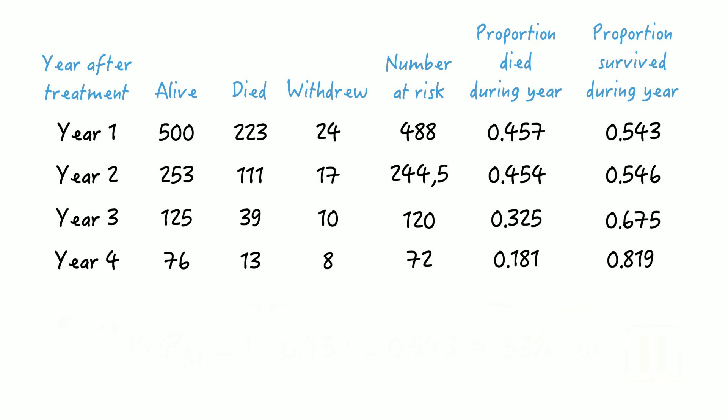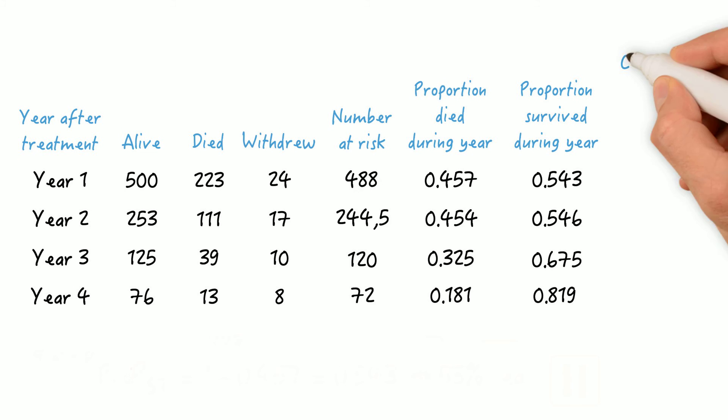Now comes the final step in the process, and that's to calculate the cumulative survival from the start of the study to the end of each year follow-up. You've already learned how to do that in one of our previous videos. It's by multiplying the proportions of the individual years. So surviving from the start of the study to the end of year 1 is the same as surviving year 1, so that's 0.543.